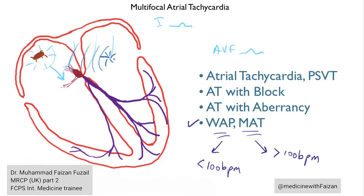Imagine if you have more than one spot causing APCs — say, two. If you count the sinus node as a third site, you should see three different p-waves. And that's what we look for in diagnosing either multifocal atrial tachycardia or wandering atrial pacemaker: a minimum of three different p-wave morphologies.